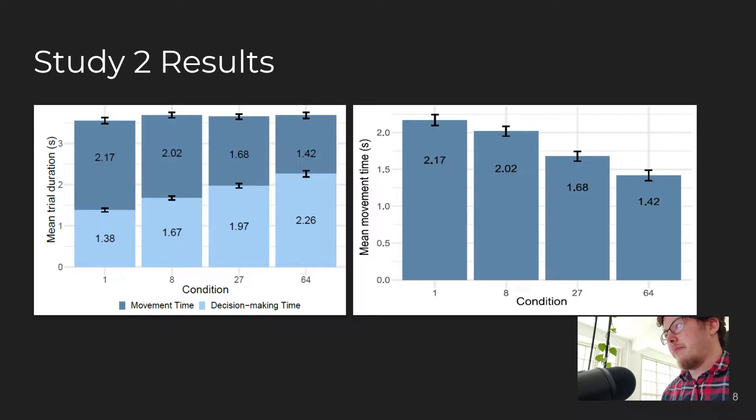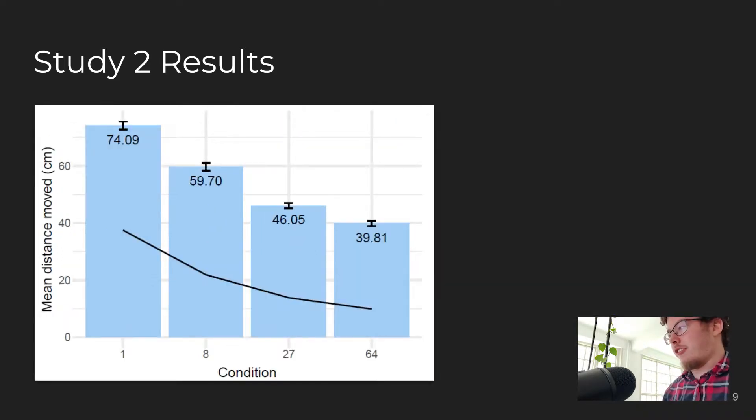In the second study, participants were not overall significantly faster with more hands. However, we can isolate the participants' decision-making time by measuring how long it takes until they start moving in each trial. The decision-making time is significantly higher with more hands, and the time spent moving is significantly lower. And as in the first study, participants also move significantly less with more hands.